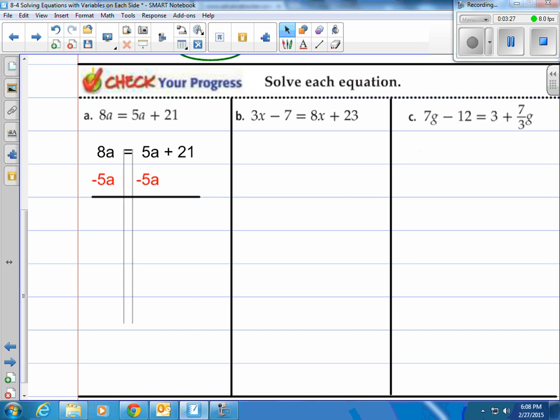Step 1 is going to be to subtract 5a from both sides, since that's the smaller one. Get it over to the left side. And now we have 3a equals 21. And then we divide by 3, and a equals 7.